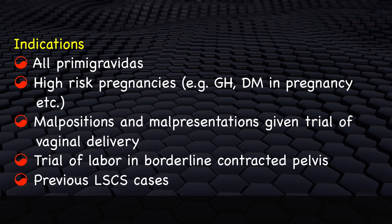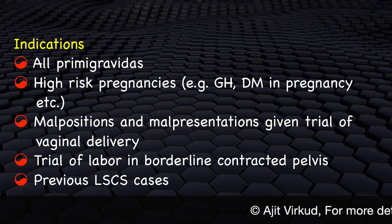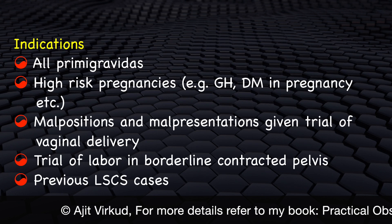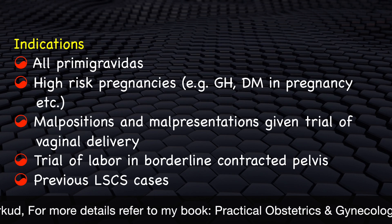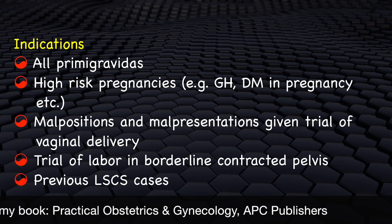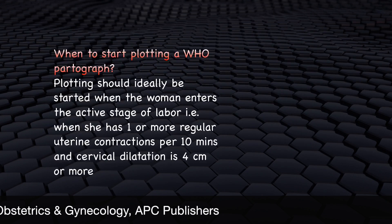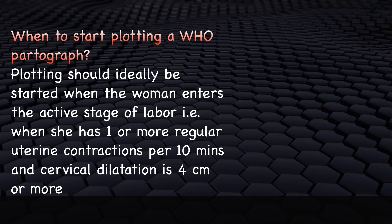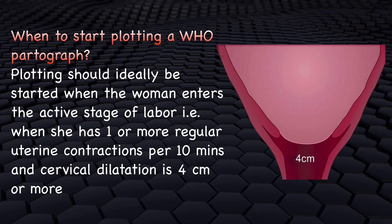Indications for plotting a partograph are: all primary cavities; high-risk pregnancies such as gestational hypertension, preeclampsia, diabetes in pregnancy, etc.; malpositions such as occipitoposterior position and malpresentations such as breech given a trial of vaginal delivery; trial of labour in borderline contracted pelvis cases; and previous caesarean section cases given a trial of labour. Plotting should ideally be started when the woman enters the active stage of labour, that is when she has one or more regular uterine contractions per 10 minutes and cervical dilatation is 4 cm or more.